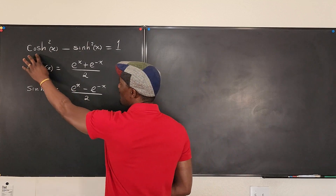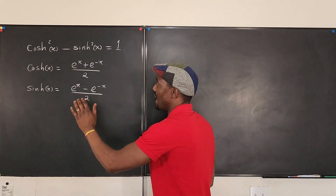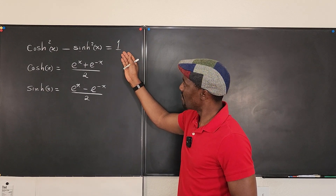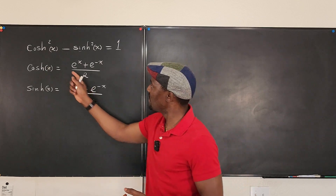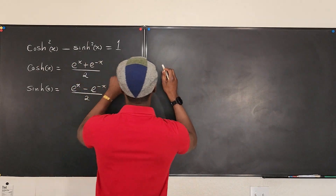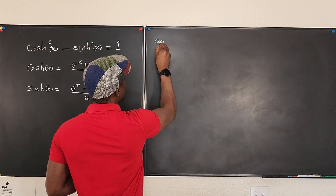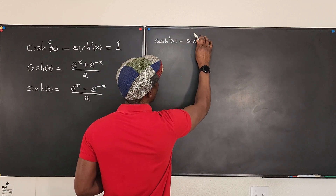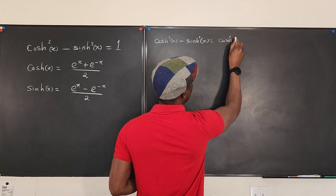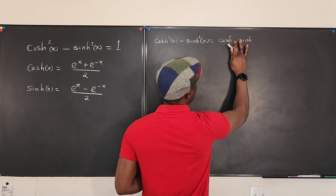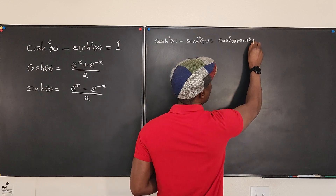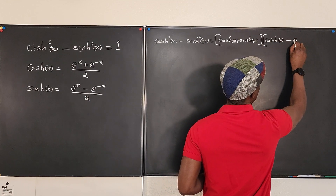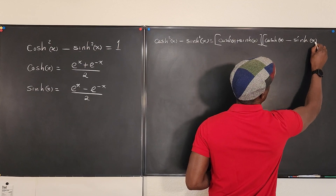Now, there are two ways to approach this. I could square each definition separately and then subtract them, expecting to get one. But instead I want to use the difference of two squares. So I'm going to write cosh²x minus sinh²x as the product of (cosh x + sinh x) multiplied by (cosh x minus sinh x).